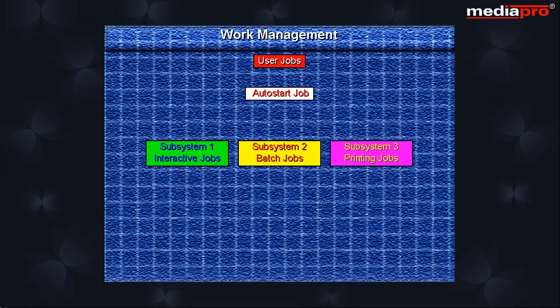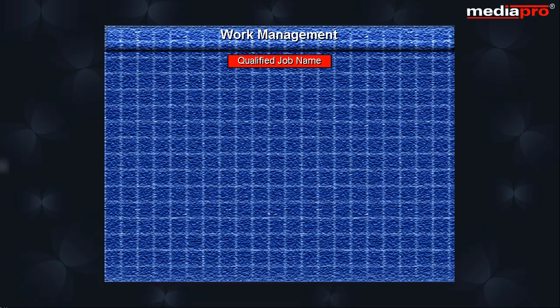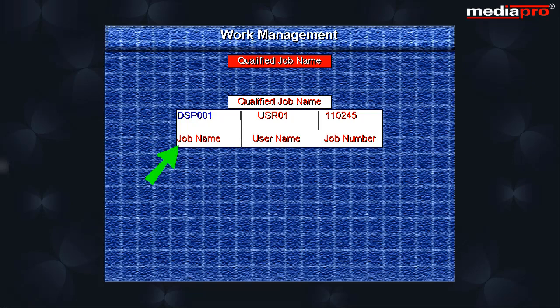We will see subsystems in a little while. Let us take a closer look at jobs. Every job is identified by a qualified job name that consists of three parts: a job name, which is the name of the workstation that the user signs onto; the user name, which is the same as the user profile name under which the job was started; and a job number, which is a unique number that is assigned by the system.